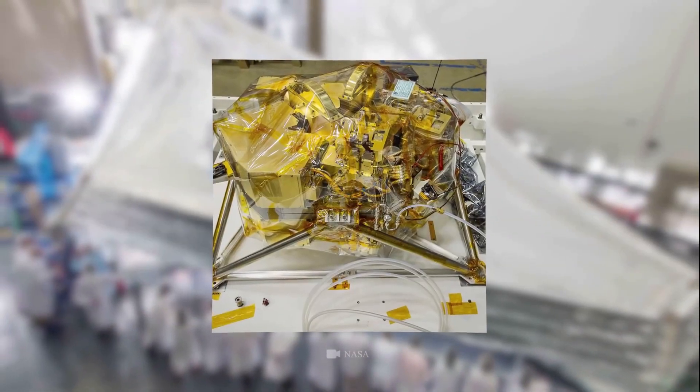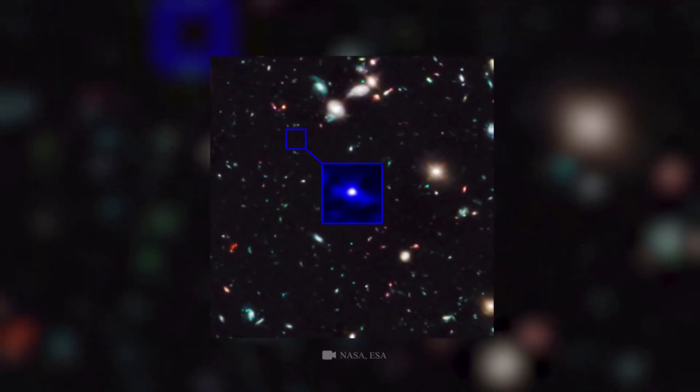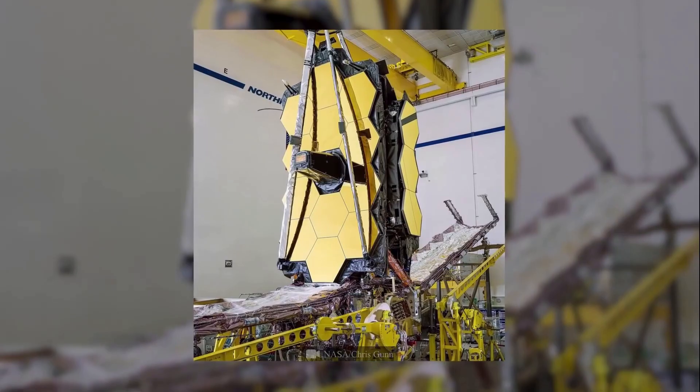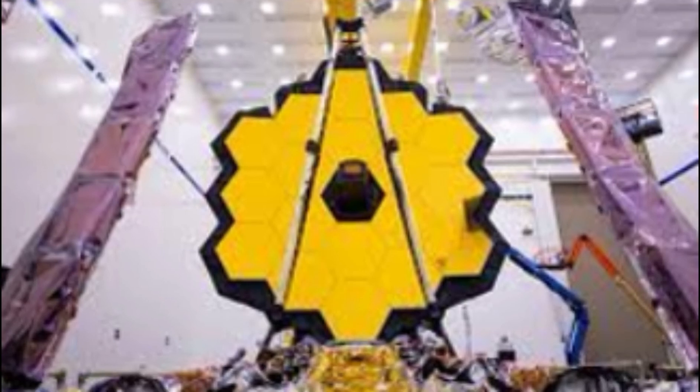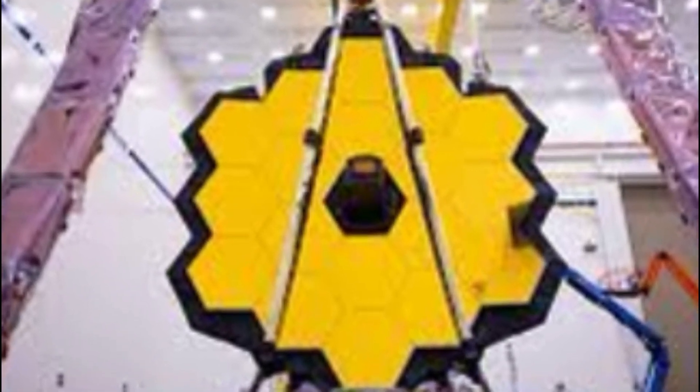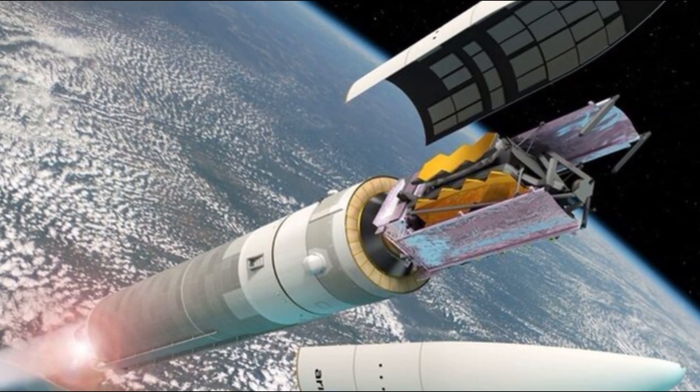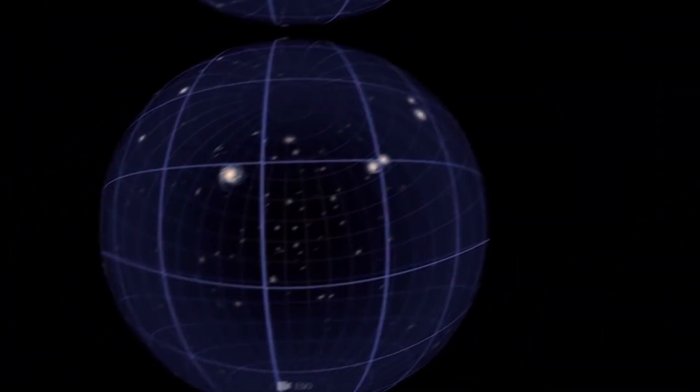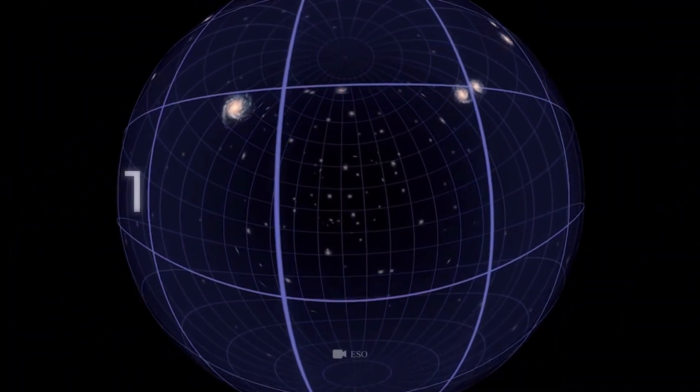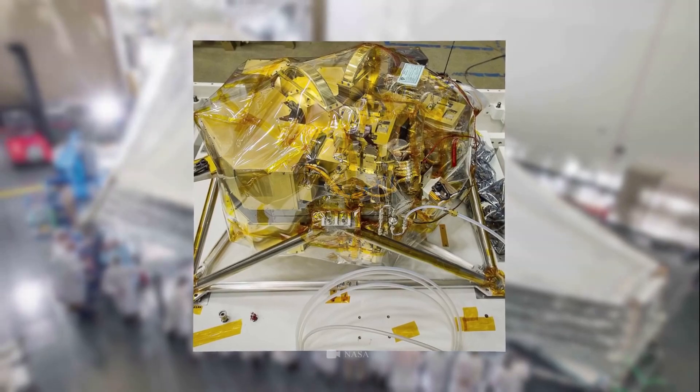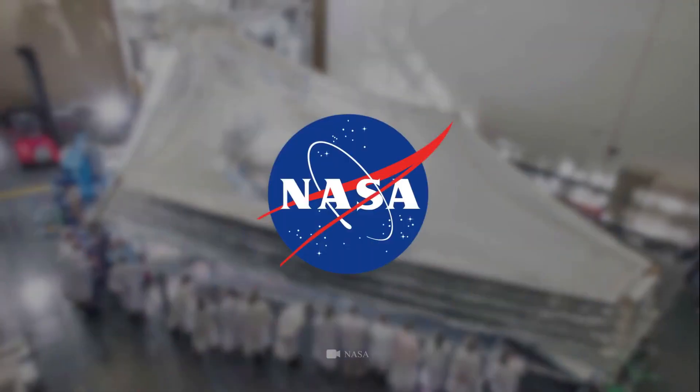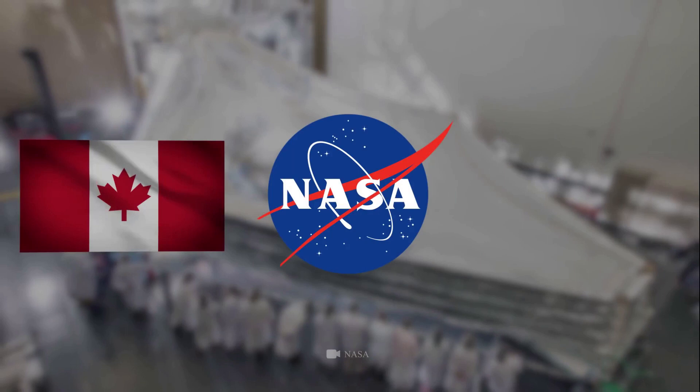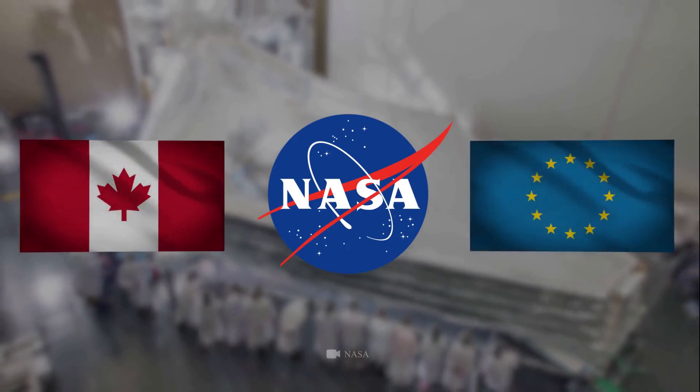The James Webb Space Telescope will be the world's premier space science observatory when it launches in 2021. Webb will solve mysteries in our solar system, look beyond to distant worlds around other stars, and probe the mysterious structures and origins of our universe and our place in it. Webb is an international program led by NASA with its partners ESA, the European Space Agency, and the Canadian Space Agency.